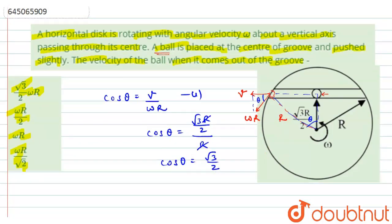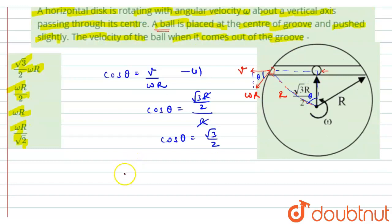So putting the value of cos theta in equation 1, we will get root 3 by 2 is equals to v over omega r. So from here, we will get velocity of the ball will be root 3 by 2 times omega r. So this is the required answer.